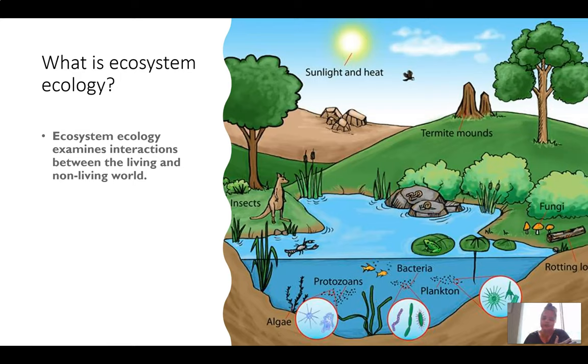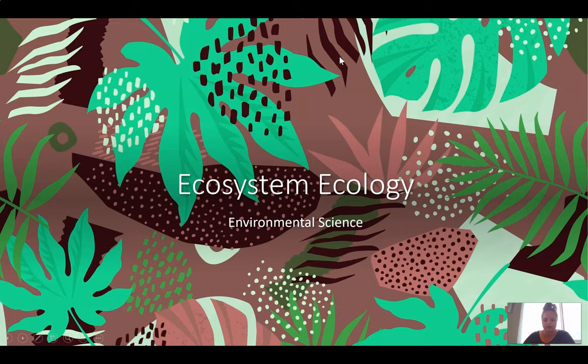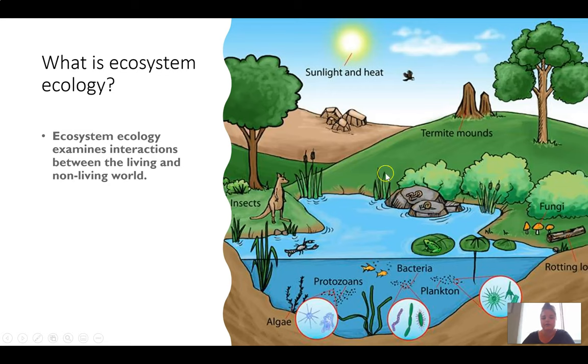So what exactly is ecosystem ecology? This examines all the interactions between the living and the non-living worlds. So here in this image you see rocks and trees, grass, fungi, bacteria, sunlight, a lot of different things. Ecosystem ecology is the study of all living and non-living things and their interactions.